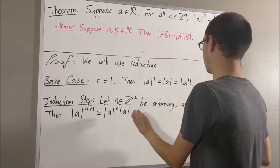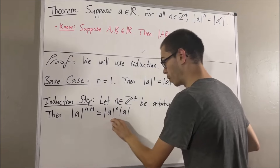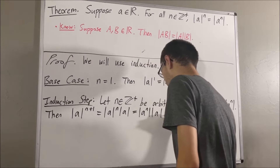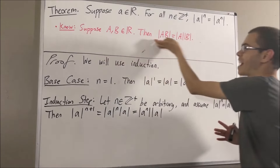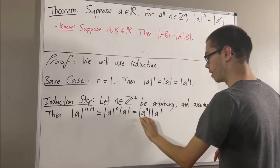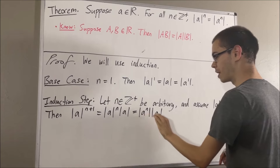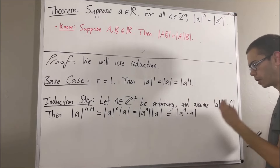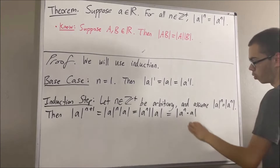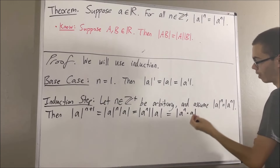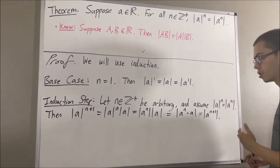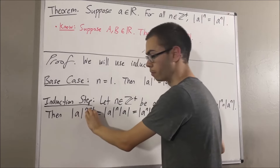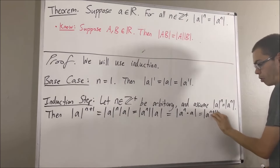But then, by our induction hypothesis, we know that the absolute value of a to the power of n is equal to the absolute value of a to the power of n. Now we can apply the fact that we know — we're putting a to the power of n and a into a single absolute value. But from our rules for exponents again, we know that a to the power of n times a is equal to a to the power of n plus 1. So through this chain of equalities, we have shown that the absolute value of a to the power of n plus 1 is equal to the absolute value of a to the power of n plus 1.